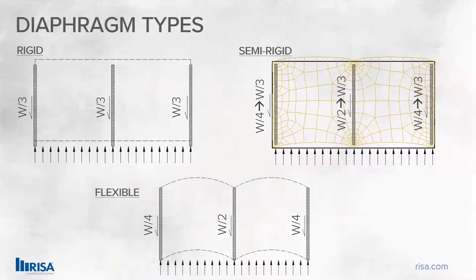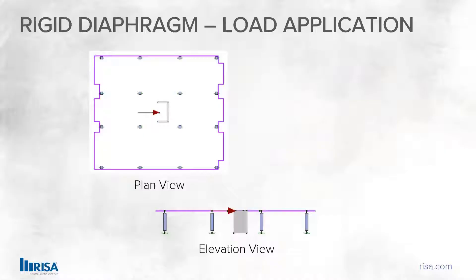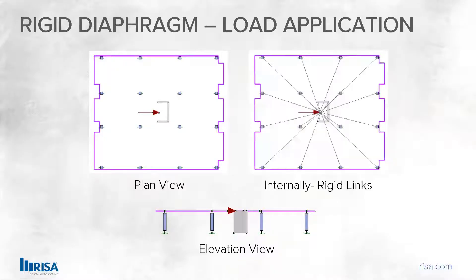Looking at how load application works, we have a simple plan and elevation view here for a rigid diaphragm. We actually go ahead and apply this load to the center of the diaphragm. Then basically every node on that level that is connected rigidly to that center location — essentially with an internal rigid link — the load gets distributed and all of those elements move together, hence the rigid nature.